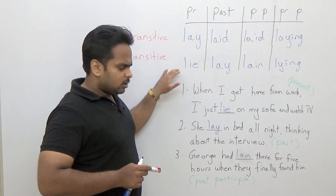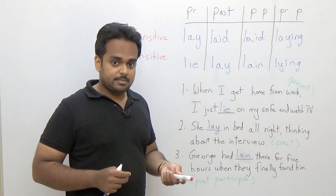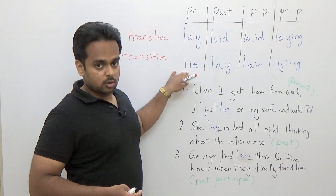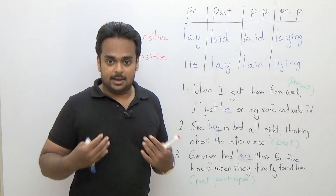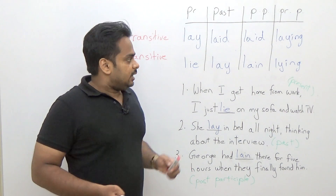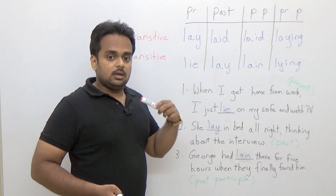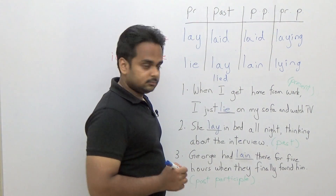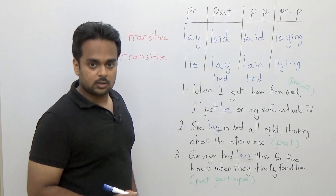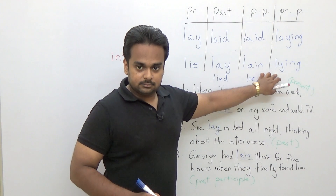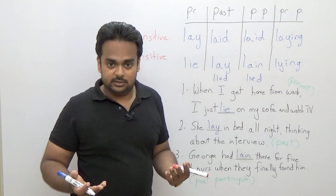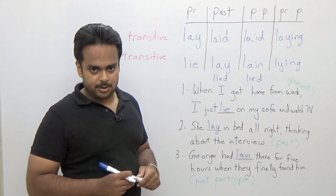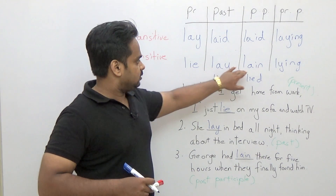The word 'lie' has one other meaning: to say something false. If I tell you I'm seven feet tall, that's a lie — I'm lying to you. When 'lie' is used in this meaning, the past tense is 'lied' and the past participle is also 'lied'. So: lied, lied, lying. For example: 'I lied to you about my height.' But remember, in this lesson we're talking about 'lay' meaning to put something down and 'lie' meaning to recline — and in that sense: lie, lay, lain, lying.